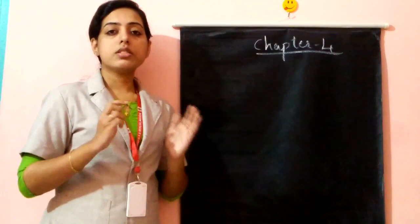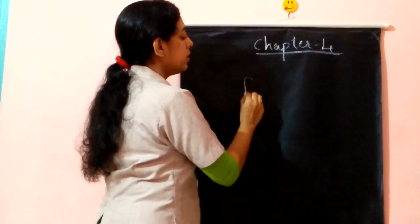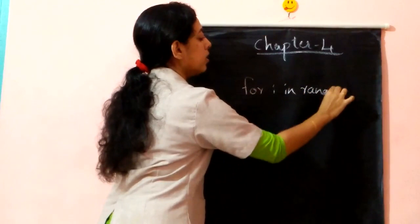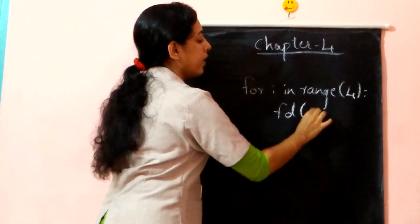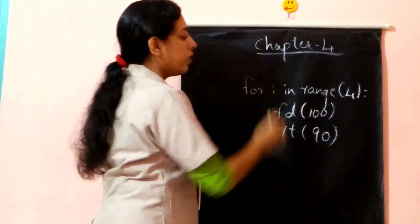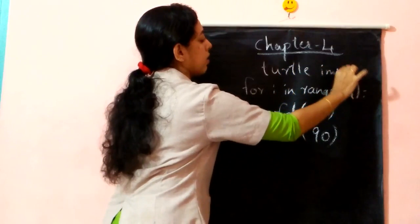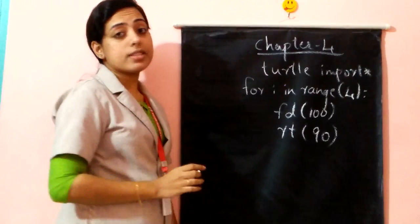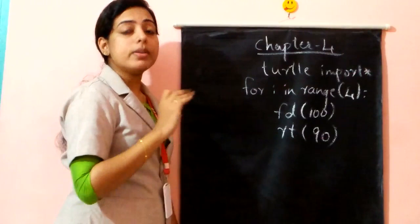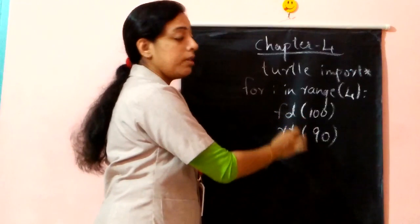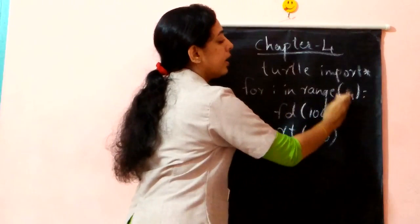We are going to perform the triangle program. In a similar way to the square, we used 'for i in range of 4', forward 100, right 90. For a triangle, how many sides are there? Three sides. So this instruction must repeat three times. So instead of four, give three.